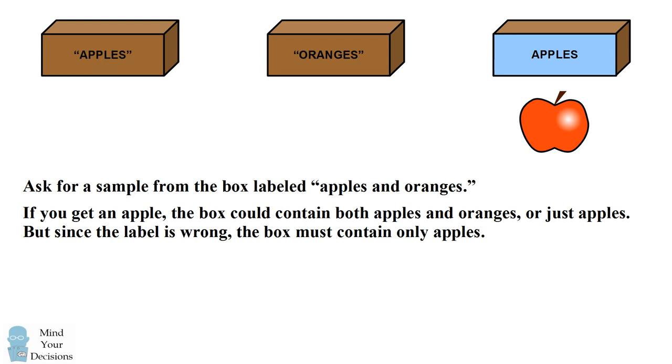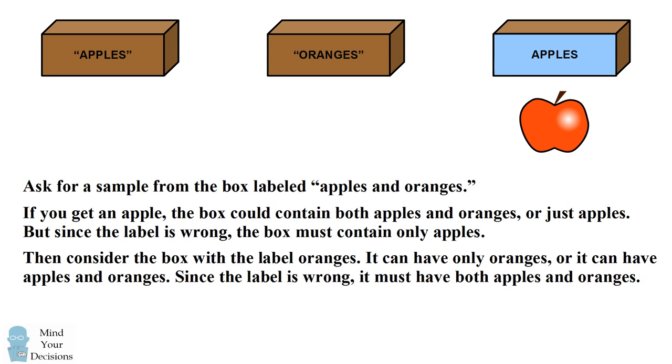Now we can label the rest of the boxes correctly. We should next consider the box that's labeled oranges. This box could have only oranges, or it could have both apples and oranges. We've already used the label for apples, so that label cannot be used.